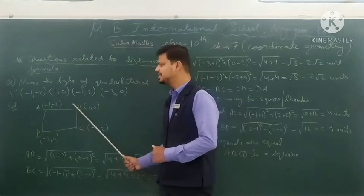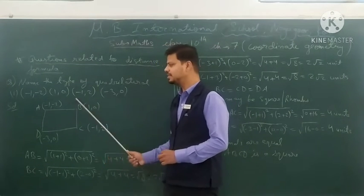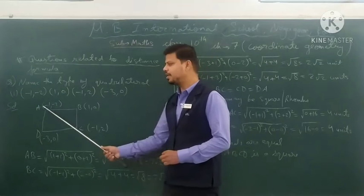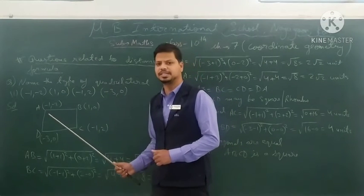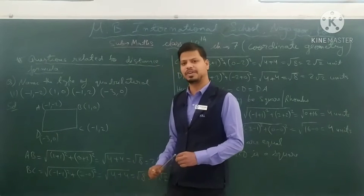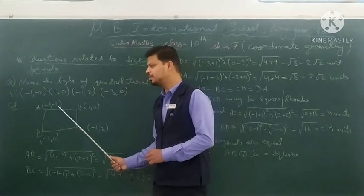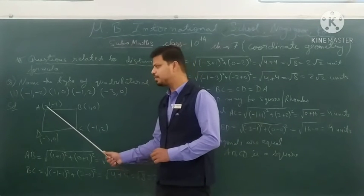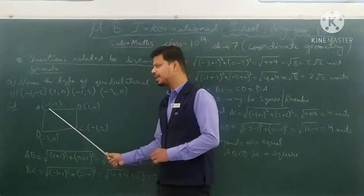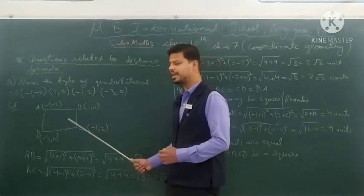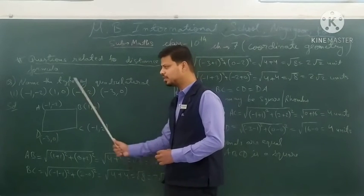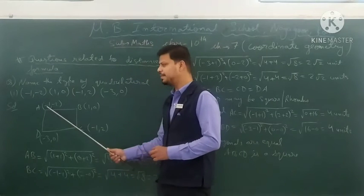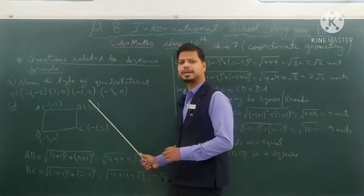The first step is to calculate the length of the sides using the distance formula. The distance formula between two points is: square root of (x₂ − x₁)² + (y₂ − y₁)². Here, the first point gives us x₁, y₁ and the second point gives us x₂, y₂ — so A is (x₁, y₁) and B is (x₂, y₂).